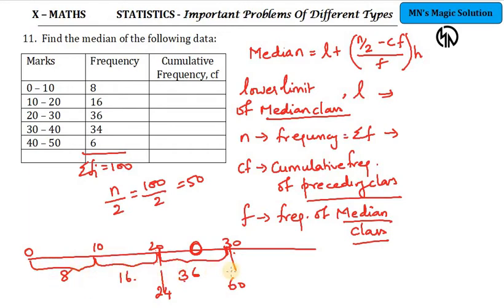So, how are we doing this? We are doing cumulative addition. 0 to 10, 8 students. 10 to 20, 16 members. Now, we have to add it. 16 plus 8, how much is it? 24. Then, again, 24 plus 36 is 60. Like that, you will do. Now, sigma fi is 100, 50th person. 25th person to 60th person. They are coming in the category range 20 to 30 marks. Up to 20, 24 persons. 20 marks and above. 25th person to 60th person. They have scored 20 to 30. 25th person to 60th person, the 50th person is there.